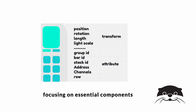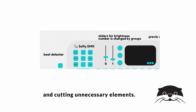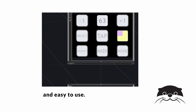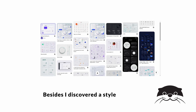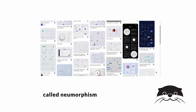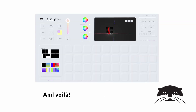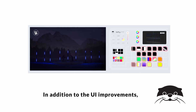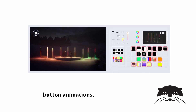So I reorganized the UI, focusing on the essential components and cutting unnecessary elements. I redesigned it to be simple and easy to use. I also discovered a style called neumorphism, learned a lot about it, and here's the version I used for the event.